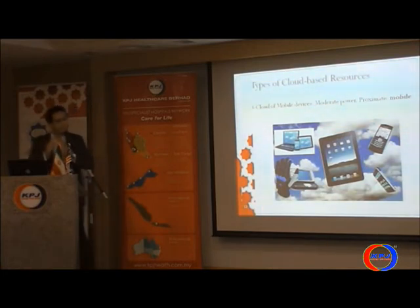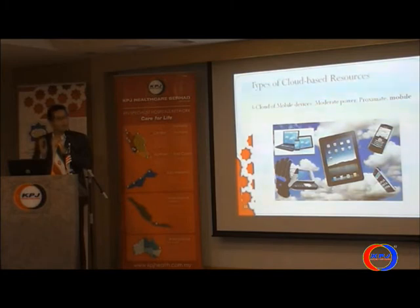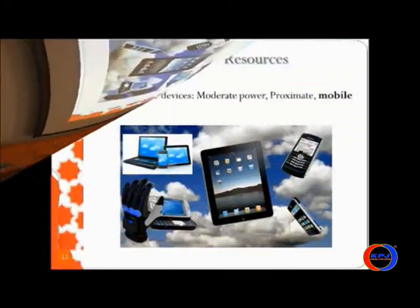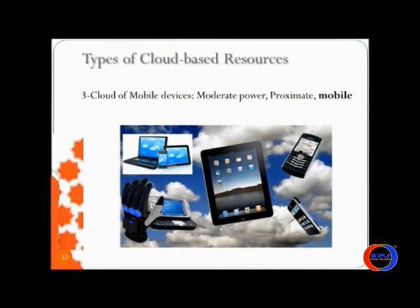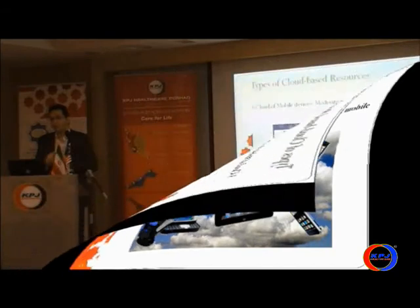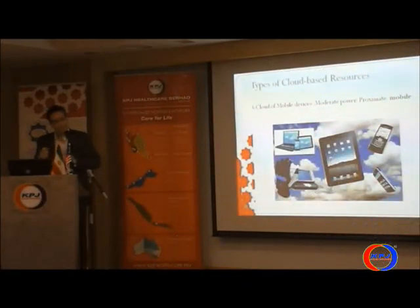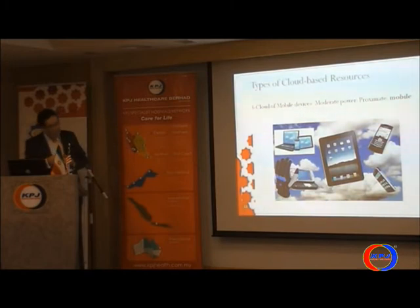We still have problems with these resources. The third type — which is my own research group's approach — asks: why don't we use the benefit of all these mobile devices? In this room alone, we have at least 50 mobile devices. If I can make a cloud of mobile devices, I can use the resources of other mobile devices for my own. If my mobile device doesn't have enough battery, you may sell battery resources to me and I will pay you. This is the third group of resources, called the cloud of mobile devices.